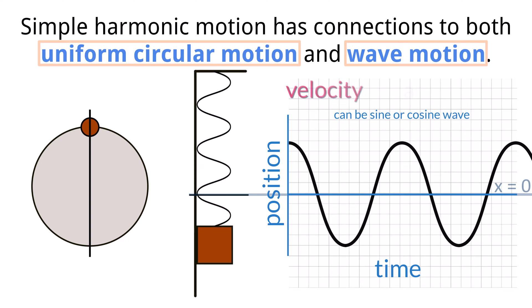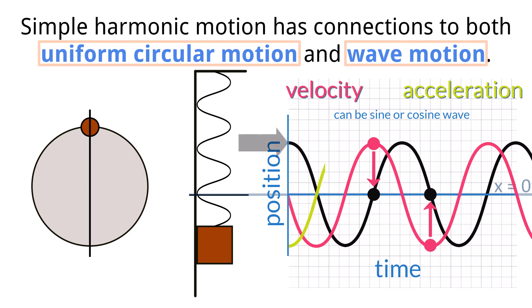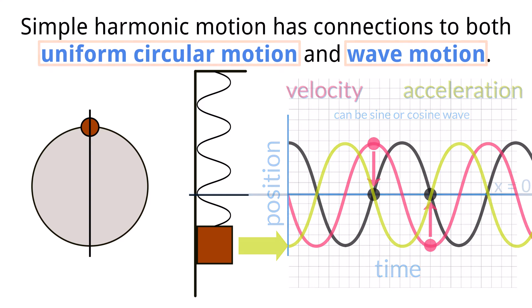The corresponding velocity and acceleration graphs will also be sinusoidal in nature. The velocity graph will have its maximum and minimum when the displacement graph is at zero. The acceleration graph will look like the negative of the displacement graph, again reinforcing the point that the acceleration will be in the opposite direction as the displacement.